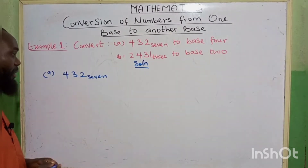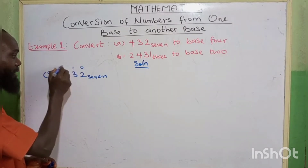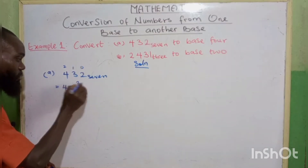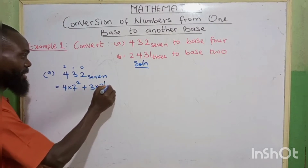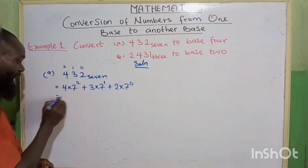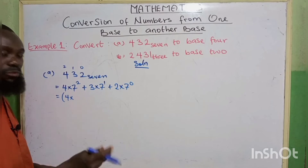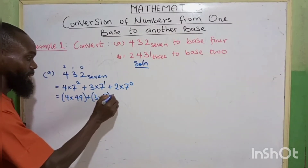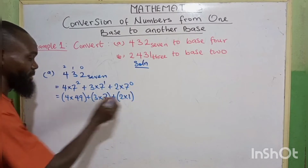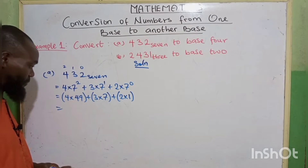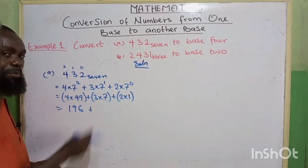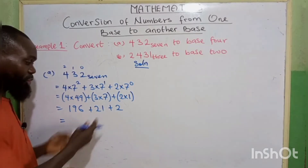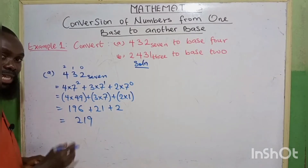Now we have 432 base 7. Let's label the digits as positions 2, 1, 0. We are converting to base 10 first. That is: 4 multiplied by 7 raised to the power 2, plus 3 multiplied by 7 raised to the power 1, plus 2 multiplied by 7 raised to the power 0. Since 7 to the power 0 is 1, we have 4 times 49, which is 196, plus 3 times 7, which is 21, plus 2 times 1, which is 2. Our final answer when we sum up is 219 in base 10.